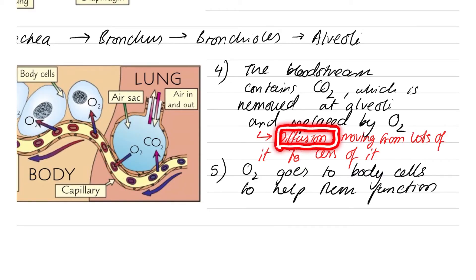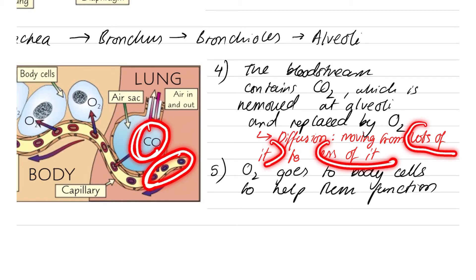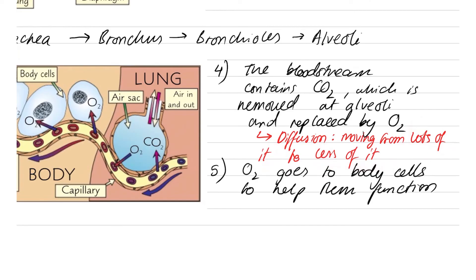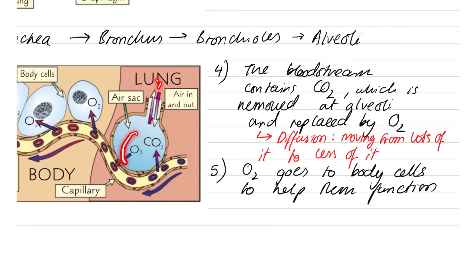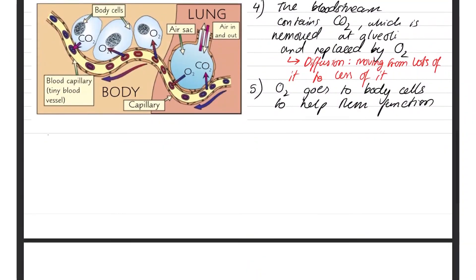Diffusion is simply gases moving from an area where there's lots of it to where there's less of it. There's lots of CO2 in the bloodstream and very little in the alveoli, so the carbon dioxide moves from the blood into the alveoli. In the alveoli there's lots of oxygen from breathing in, and very little oxygen in the blood, so the oxygen moves from the alveoli into the blood. This all happens through diffusion.